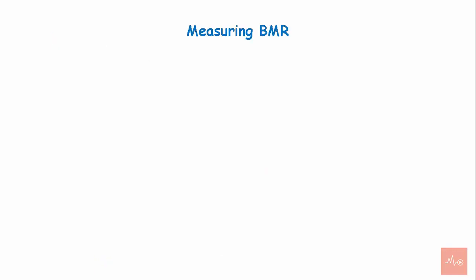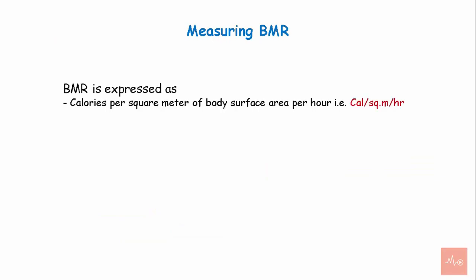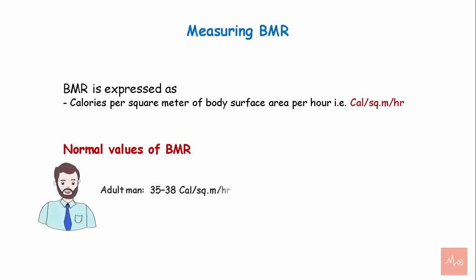Measuring the basal metabolic rate. The BMR is expressed as calories per square meter of body surface area per hour. The normal values of BMR for an adult man is 35 to 38 calories per square meter per hour. For an adult woman, it is 32 to 35 calories per square meter per hour.